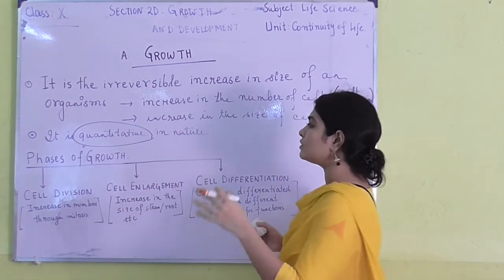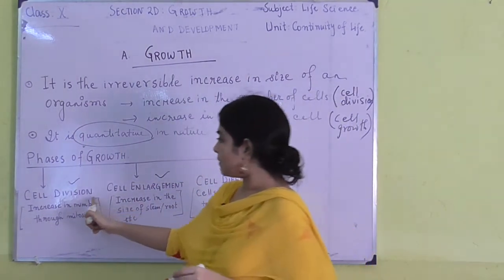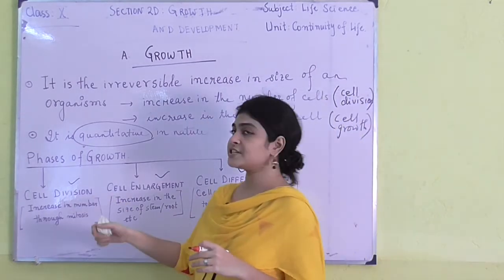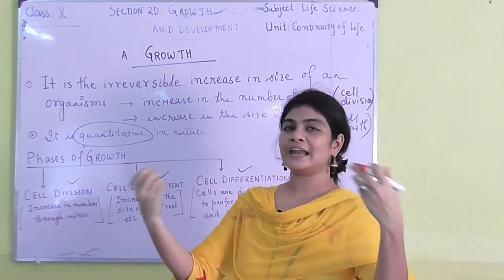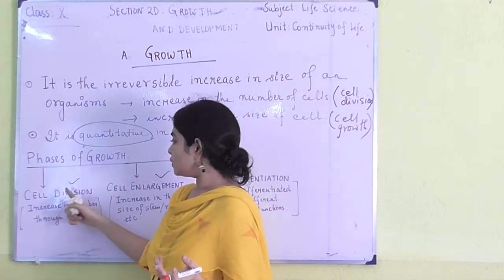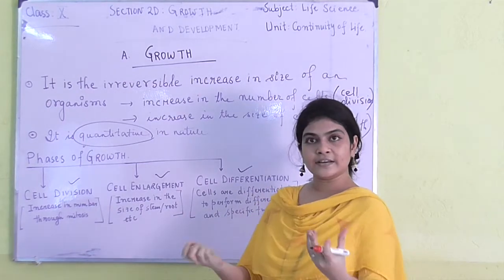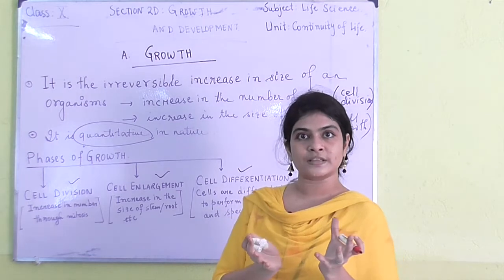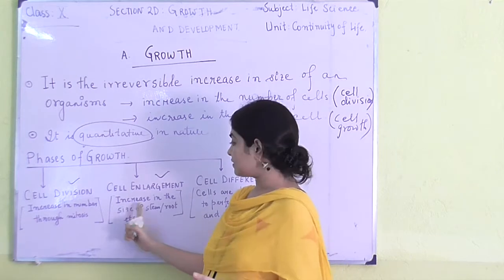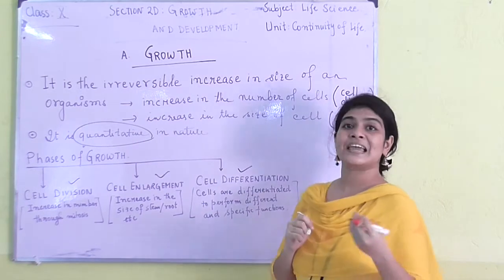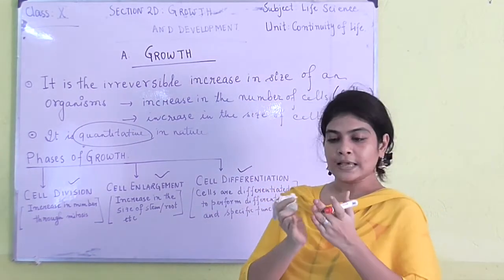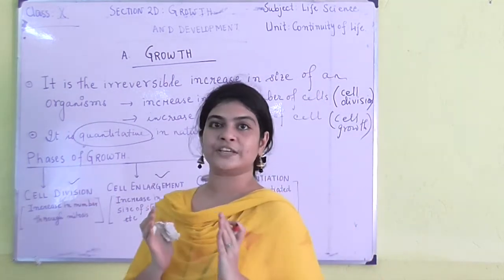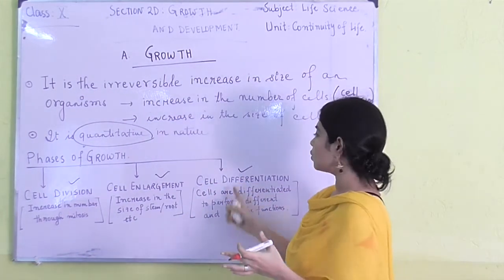Growth is divided into three basic phases. Number one is cell division — the process by which one cell divides into two and they again divide through mitosis. Then comes cell enlargement, where complex processes within the cell result in maturation, including increase in the size of stem, root, etc. The last phase is cell differentiation, where once the cell matures, division of labor takes place — specific cells are assigned to perform specific duties.